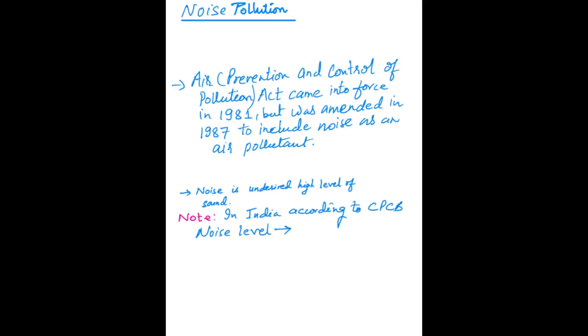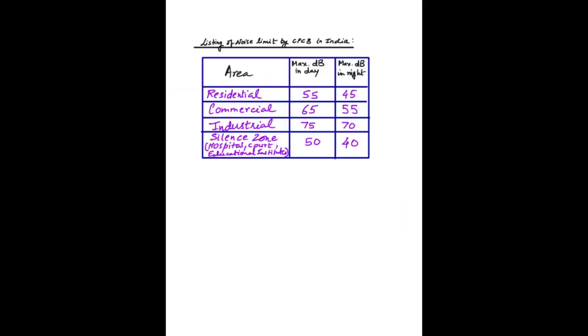Noise is a kind of pollution. What is noise? Noise is undesired high level of sound. In India, according to CPCB, there are certain limits which are permissible during day and night time. Let us see what are these limits. In different areas of the city, there are different limits of noise. During daytime in residential areas, the maximum noise limit should be 55 decibel, and the unit of noise is decibel. In nighttime, it should not be more than 45.